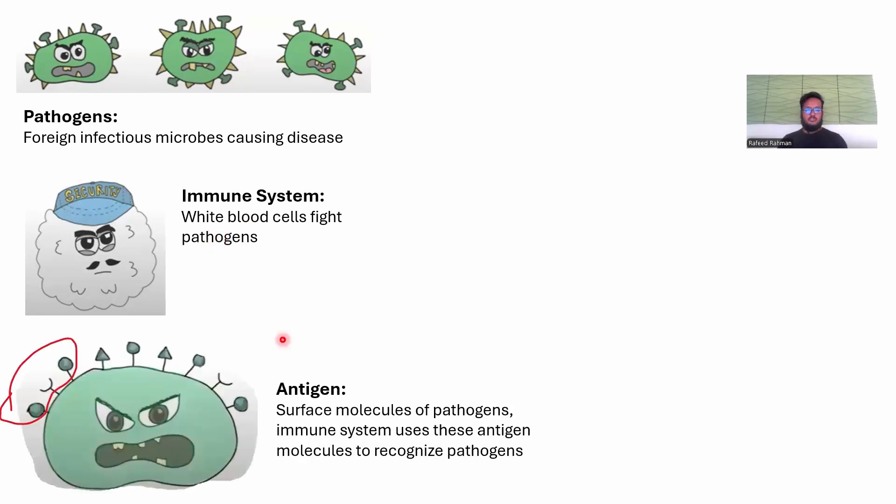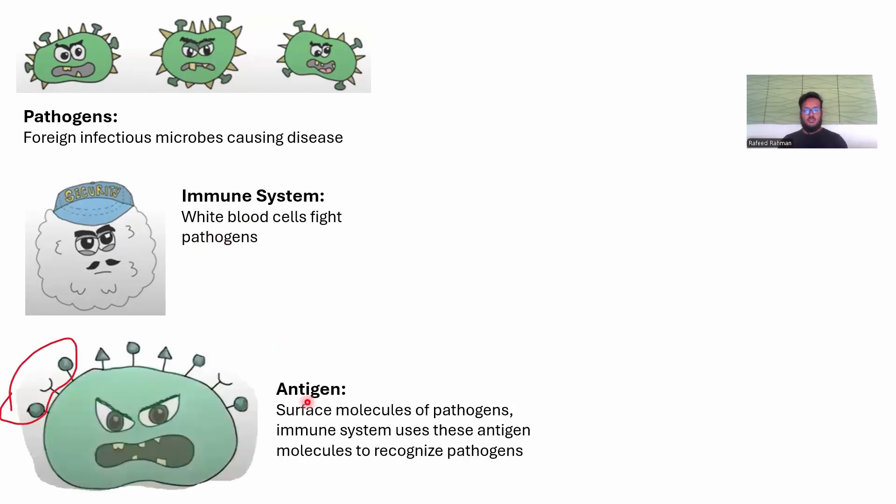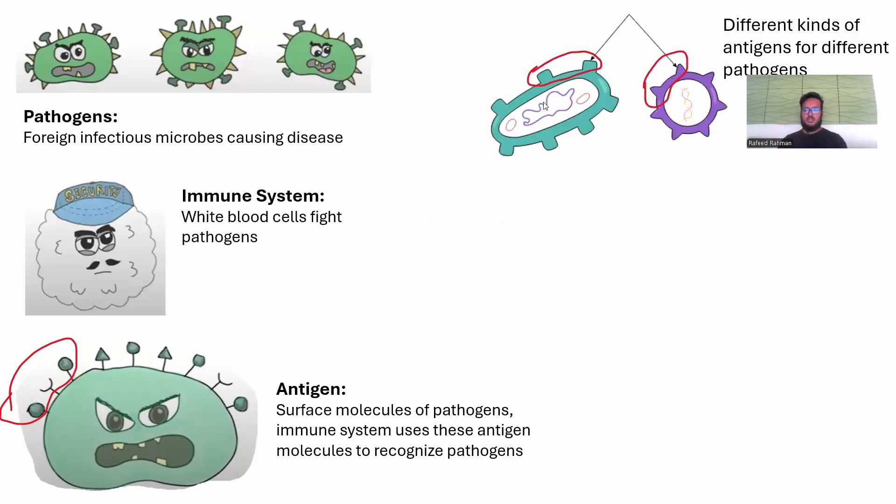Then we have antigen. When we hear the word antigen it looks really fancy, but it's actually very simple. On the pathogens you can see some molecules which are very heterogeneous looking. These surface molecules of pathogens are called antigens. Your immune system tries to trace these antigens and detect whether this is a pathogen or not. Different types of pathogens can have very different antigens.